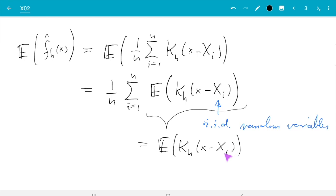So let's use X1 just to make clear they are all the same, and then we get one over n times n times the expectation for X1, and then the one over n times n cancel and get the result: expectation of k_h applied to x minus random X1. Good, so what can we do with this?